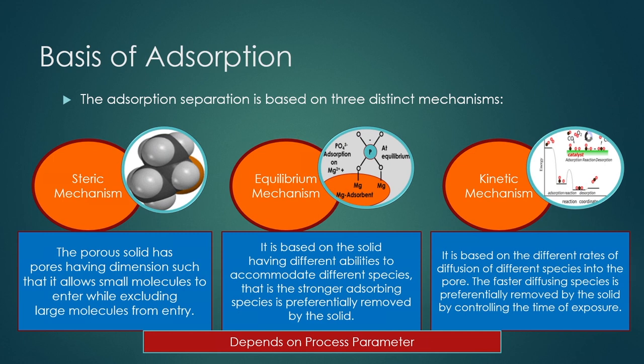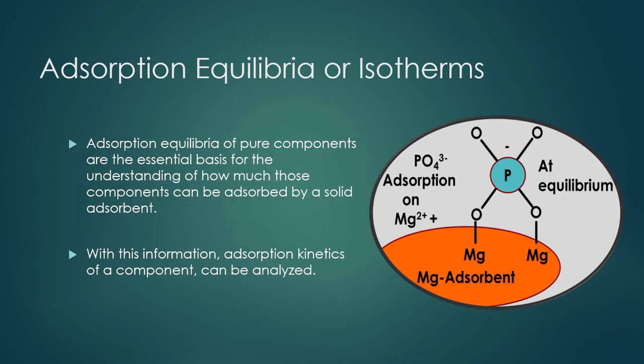All these mechanisms depend on process parameters such as size of the particles, amount of particles, transport phenomena of solid materials or gas or liquid molecules onto the surface, and also the porosity of the materials. Some other intrinsic characteristics also affect adsorption. An important criterion to assess adsorption characteristics is called adsorption equilibria or isotherms.